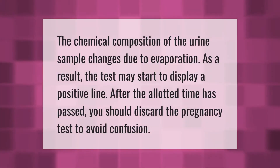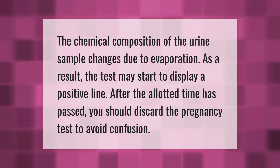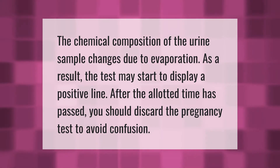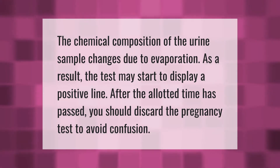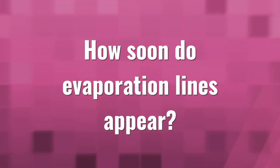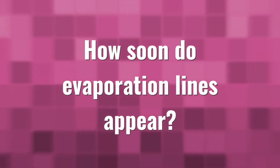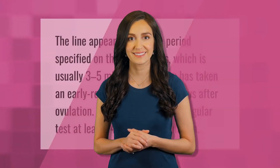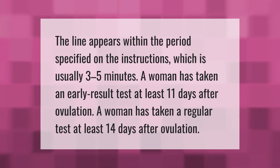The chemical composition of the urine sample changes due to evaporation. As a result, the test may start to display a positive line after the allotted time has passed. You should discard the pregnancy test to avoid confusion. The line appears within the period specified on the instructions, which is usually three to five minutes.